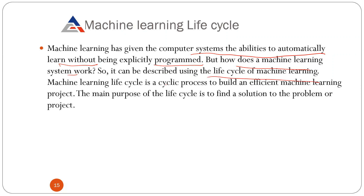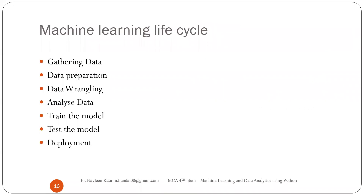The machine learning life cycle is a cyclic process to build an efficient machine learning project. The main purpose of the life cycle is to find a solution to the problem. Whenever your machine is learning, it goes through these steps: first, data is gathered; then data preparation; then data wrangling; then analysis of the data; then training the model; testing the model; and finally deployment.